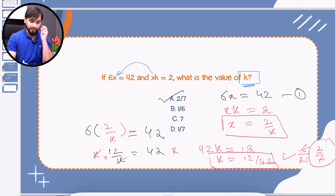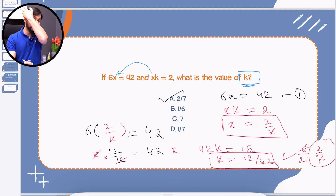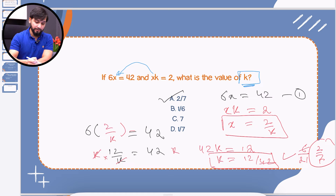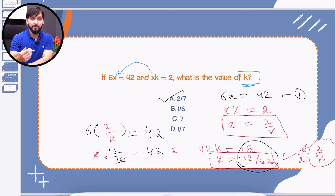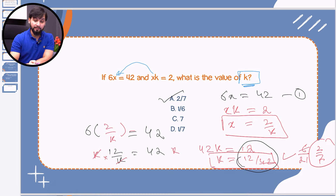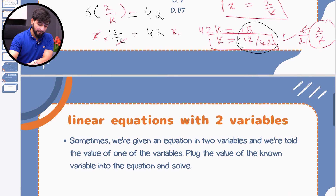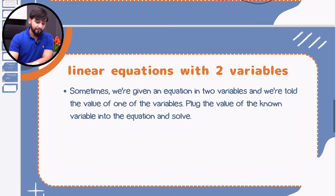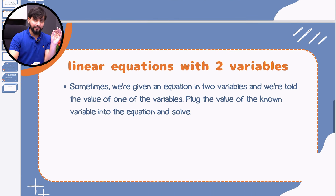Option A — 2/7 — is the correct answer. After solving, you need to simplify the fraction to match the options given. Keep dividing both numerator and denominator by the same number until you reach the simplified form. This is how you will see this type of question in the SAT exam. That was the linear equation with one variable — we were only dealing with x.